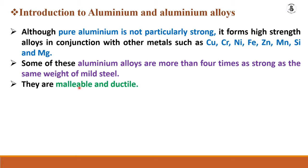Aluminium alloys are malleable, so you can easily convert them into thin sheets. They are also ductile, meaning if you pull the material it will easily elongate. Compared to mild steel, aluminium alloy has higher strength along with good malleability and ductility, so you can easily convert it into desired shapes and sizes.